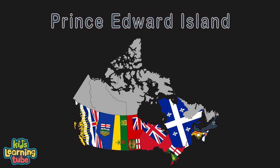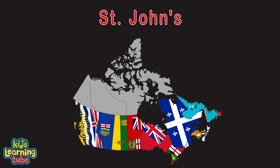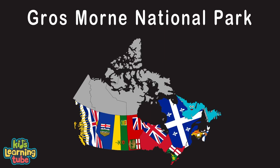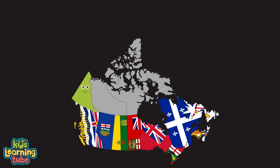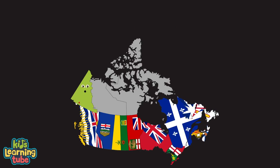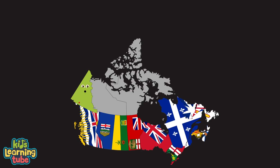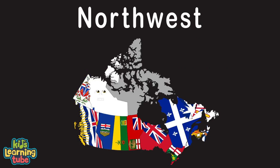I'm Prince Edward Island — my capital is Charlottetown. I'm known for my seafood, mostly lobsters and mussels. The Gulf of St. Lawrence is where you can view sea vessels. I'm Newfoundland and Labrador — my capital's St. John's, the most easterly province of Canada. I'm the Yukon Territory — my capital is Whitehorse, located in the northwest of Canada. I'm home to Mount Logan, Canada's highest mountain, and known for glaciers and salmon fishing.